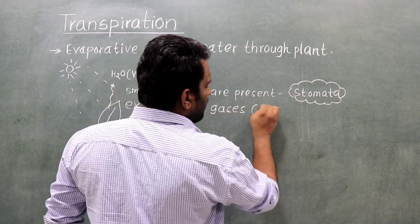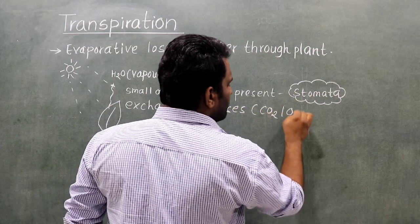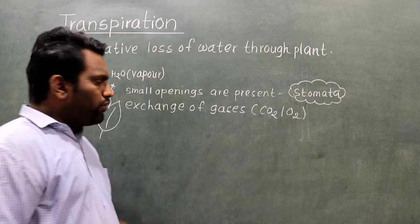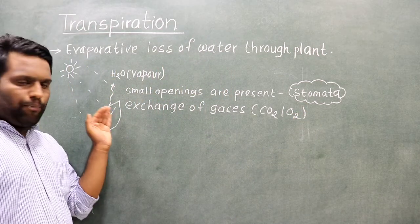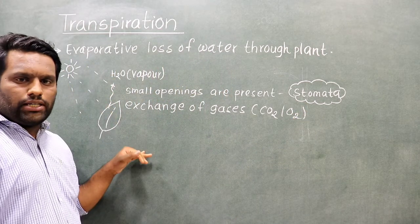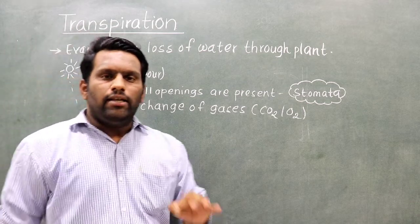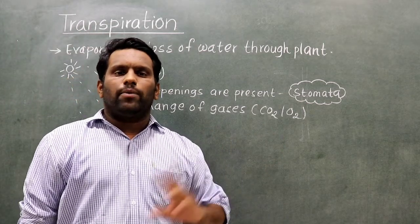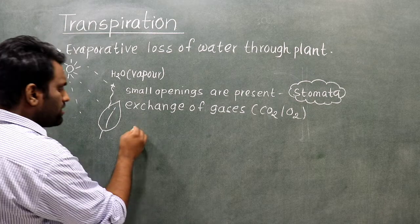For example, carbon dioxide and oxygen are exchanged through these openings. The upper surface and lower surface of the leaf are both present, and oxygen and carbon dioxide pass through the openings in these surfaces.